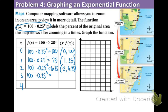100 times 0.25 to the 3rd. That equals approximately 1.56. And lastly, 4 is going in. And that is approximately 0.39.